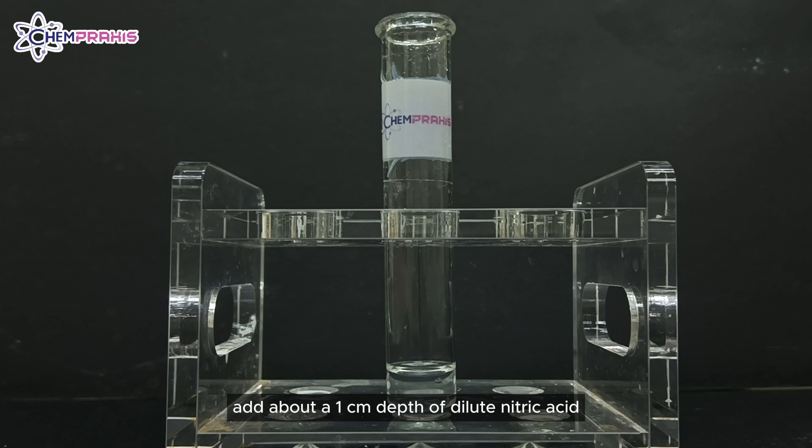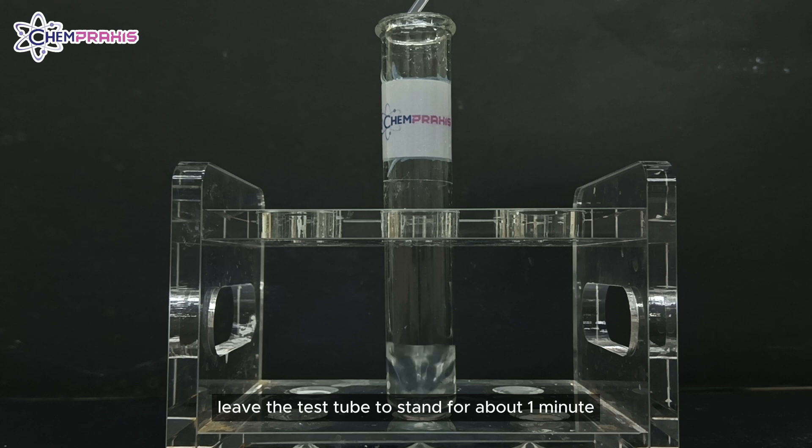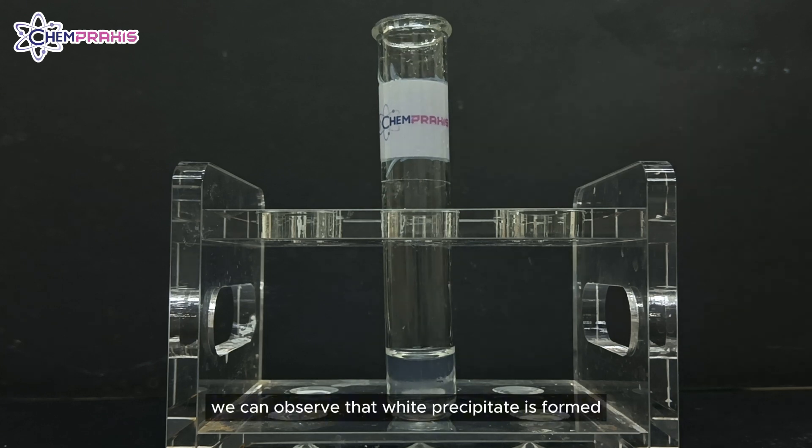Add about a 1 cm depth of dilute nitric acid followed by a few drops of aqueous silver nitrate. Leave the test tube to stand for about 1 minute and then we can observe that white precipitate is formed.